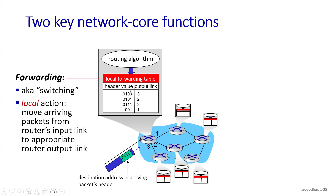For example, the router receives a packet whose destination address is 0111, and then it consults the routing table. In the routing table it has the destination IP addresses, and here 0111 is mapped to output link number two. So the router consults the table, finds out it needs to forward this packet on port number two. This process of looking up and then forwarding to port number two is local forwarding, or switching.